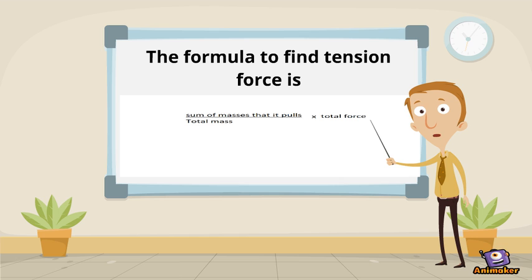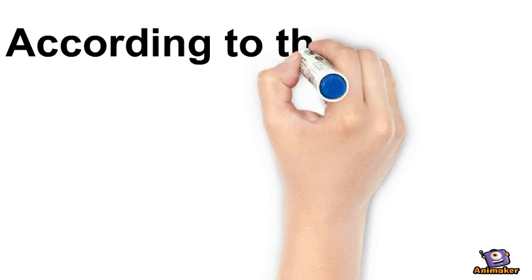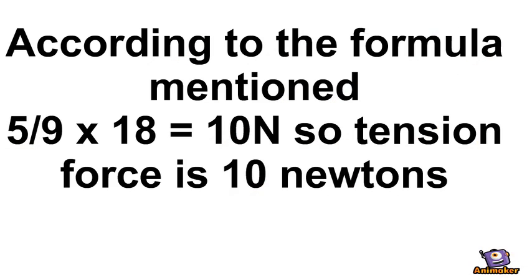The basic formula to find the tension force is: sum of masses that it pulls, divided by total mass, multiplied by the total force applied. This formula is a bit difficult. According to the formula mentioned, the tension force between the boxes will be 5 divided by 9, times 18, which is equal to 10N.